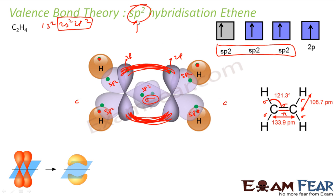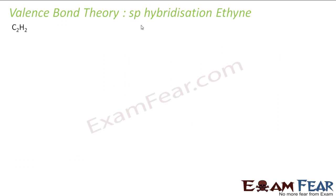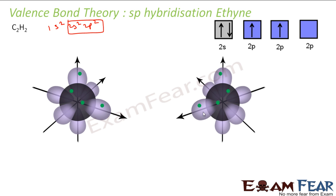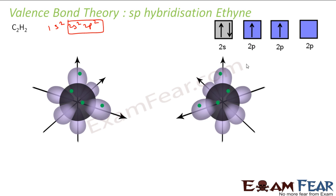Now let's look at ethyne, where carbon undergoes sp hybridization. Again, the electronic configuration for the outermost shell is 2s2 2p2. I have two carbon atoms: 2s2 2p2 and 2s2 2p2. One electron will move from 2s to 2p, so we get the excited state ready for sp hybridization.